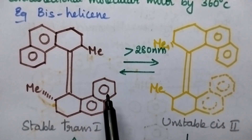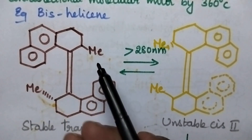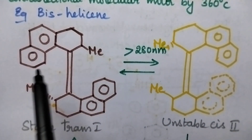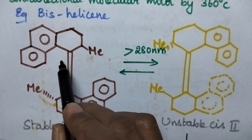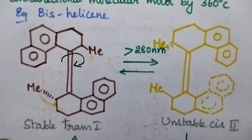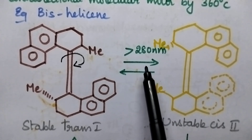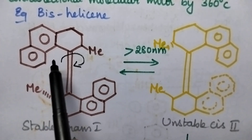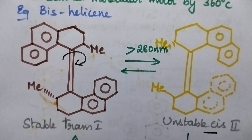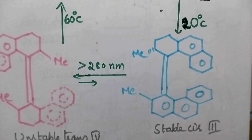With the help of light, it is possible to get back the original structure in four different steps. In the presence of light having a wavelength greater than 280 nanometers, rotation of the molecule around the double bond is possible, resulting in the formation of the unstable cis configuration.